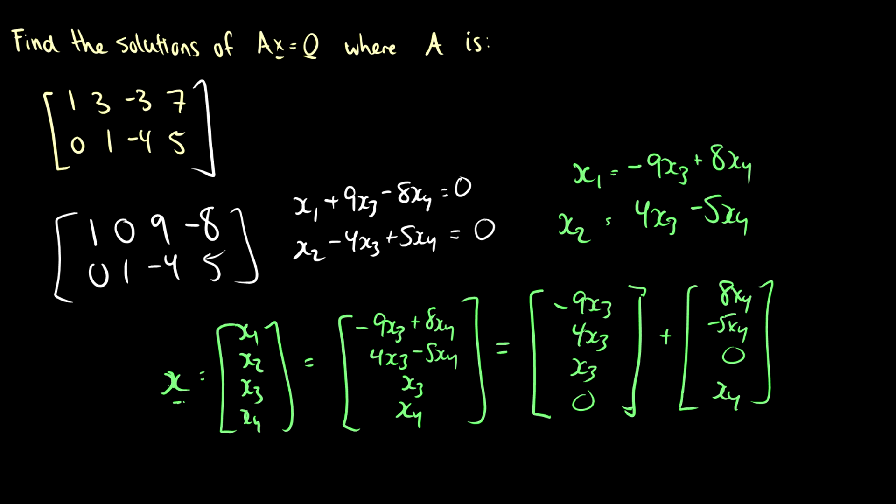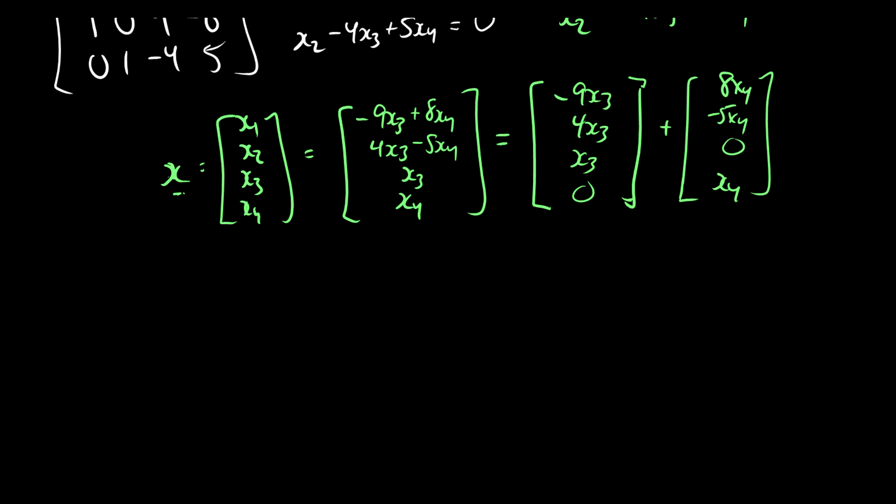So now we do the same thing as before and we factor. So here we have x3 times the vector [-9, 4, 1, 0] plus x4 times the vector [8, -5, 0, 1]. So now we can just pick values of x3 and x4 and we can get a bunch of non-trivial solutions.